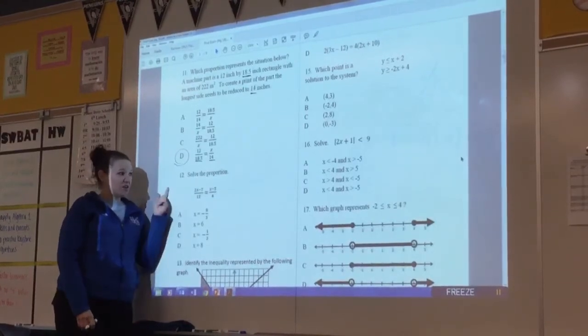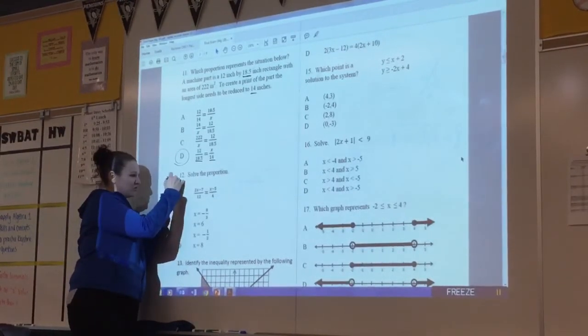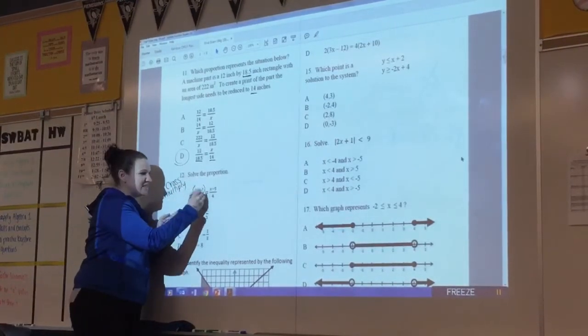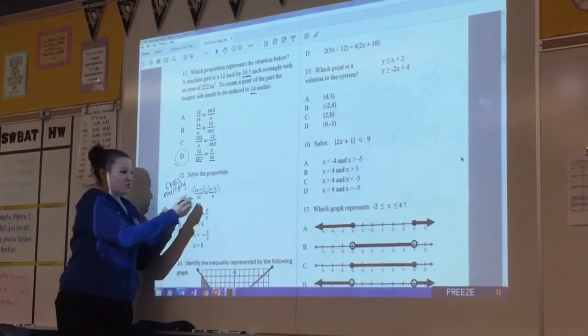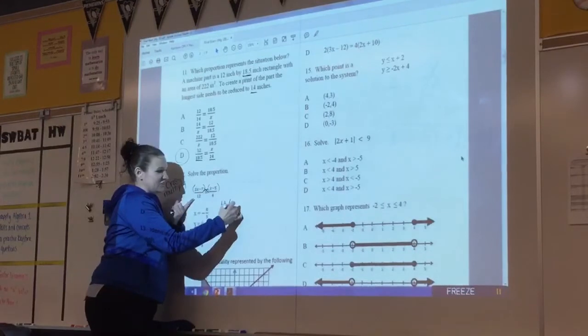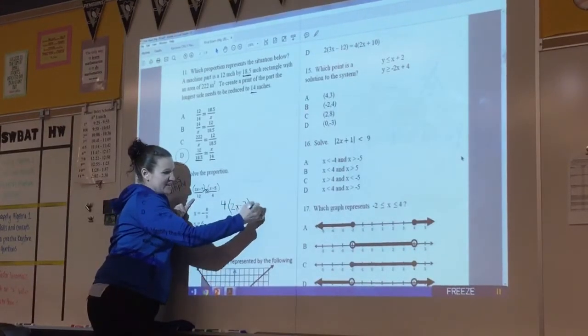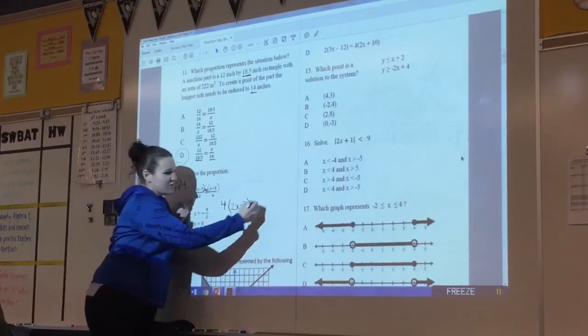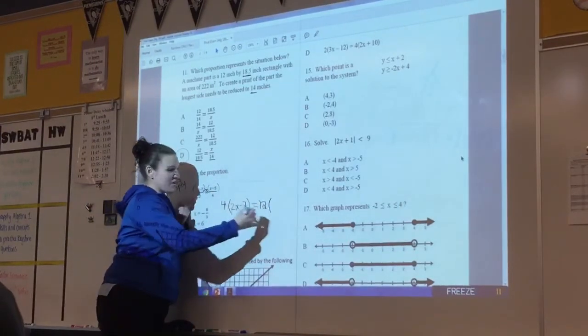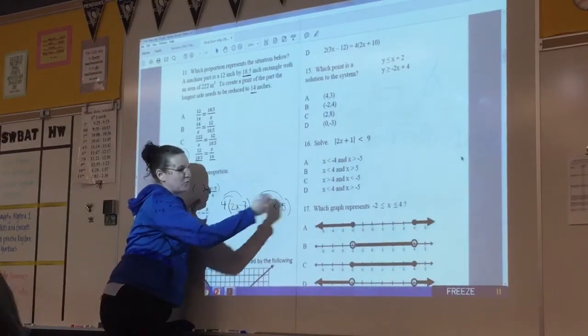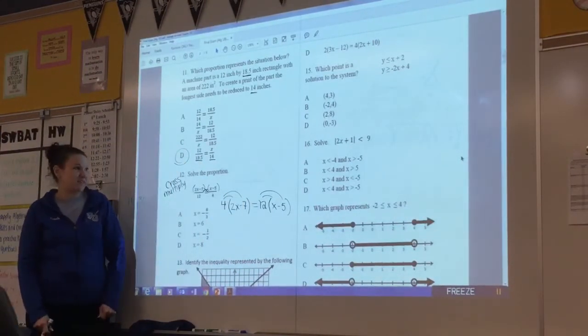We know we solve proportions by cross-multiplying so I'll let you do that. But in order to do that you need to put parentheses on anything more than one term. So when you cross-multiply you have 4 times the quantity 2x minus 7. In between there we always put our equal sign and then we cross across the other way with 12 times the quantity 2x minus 5. So when you distribute from both sides you'll be able to solve for your correct answer.